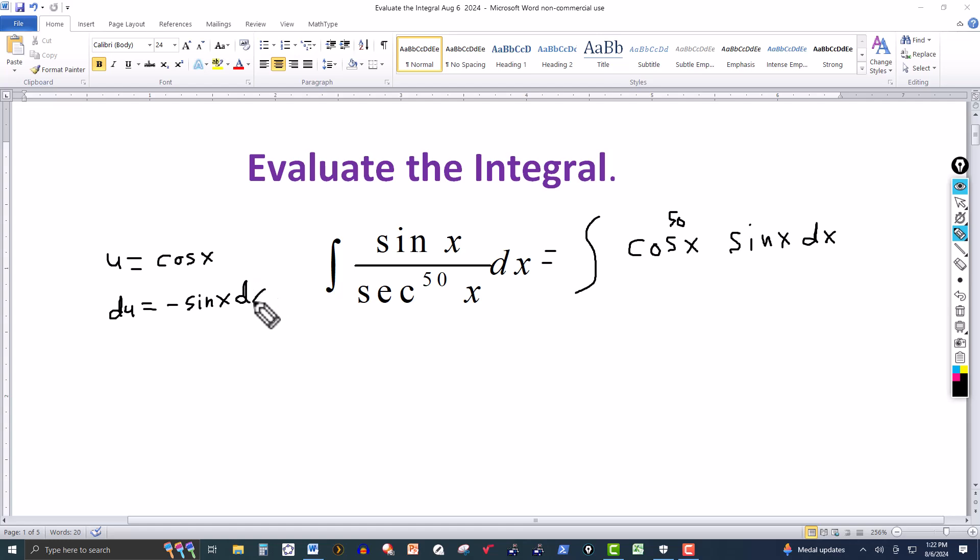Let's solve this for sine x dx and multiply both sides by negative. This gives minus du, and the right side would be positive sine of x dx.